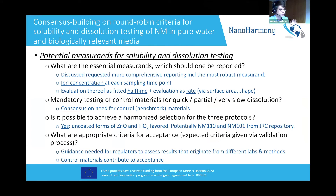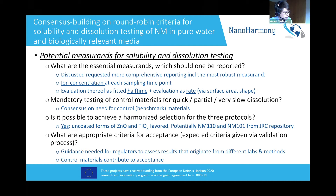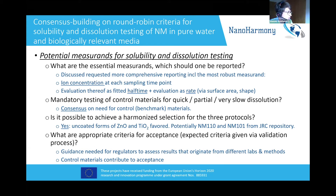Our discussion was mostly about how to organize the round robins — in black you see the questions, in blue you see the results. We asked what the essential measurements were and which ones should be reported. The group requested more comprehensive reporting, including the most robust measurement, which is the original ion concentration at each sampling time point. Additionally, one would report the evaluation of the data by a fitted half-time and by an evaluation as a rate, where the evaluation as a rate has very interesting material science implications because you scale by the available surface — but for that you need to know that surface, so it is more complicated and has more assumptions.